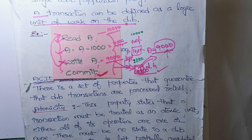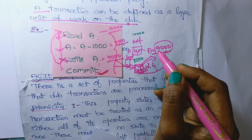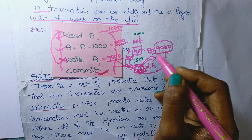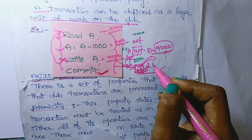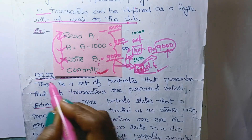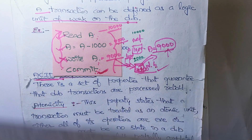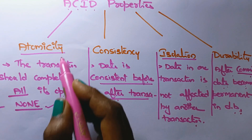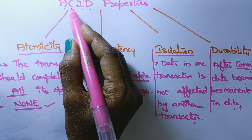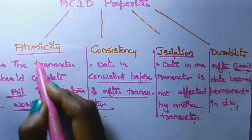After the execution of a transaction, the database should maintain consistency. To maintain the consistency of data in a database, it should follow four properties — the ACID properties. Those ACID properties are: A for Atomicity, C for Consistency, I for Isolation, and D for Durability.